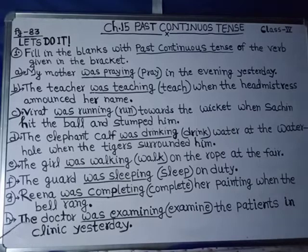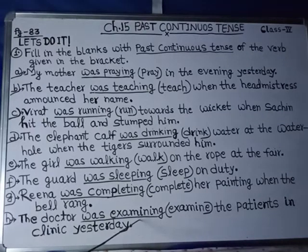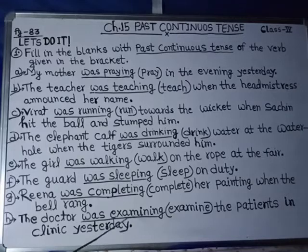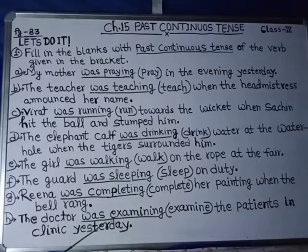H: The doctor was examining the patients in the clinic yesterday. With the verb 'examine', we removed the 'e' and added ing, giving us 'examining'. We used 'was' because we are speaking of one doctor, which is singular. So the answer is: was examining.